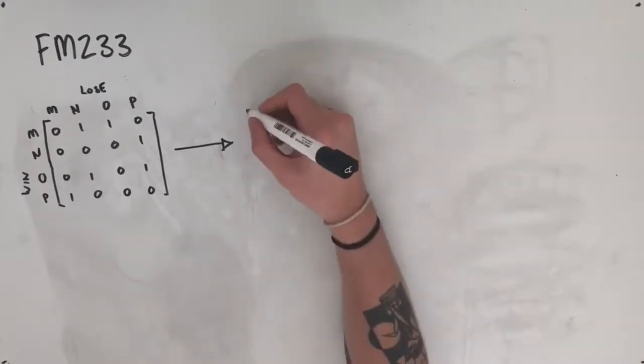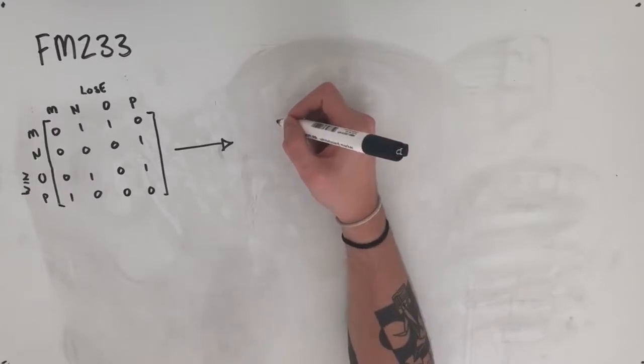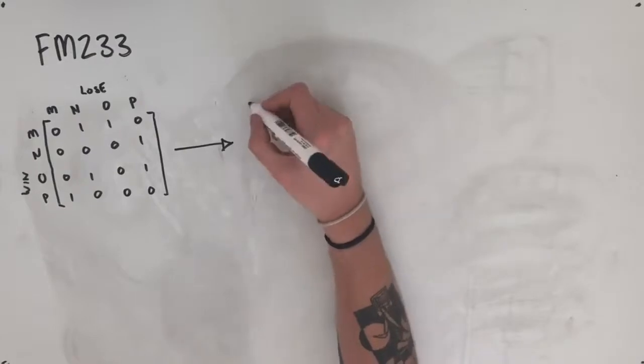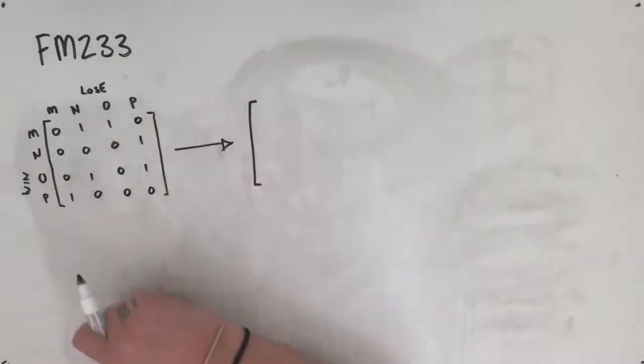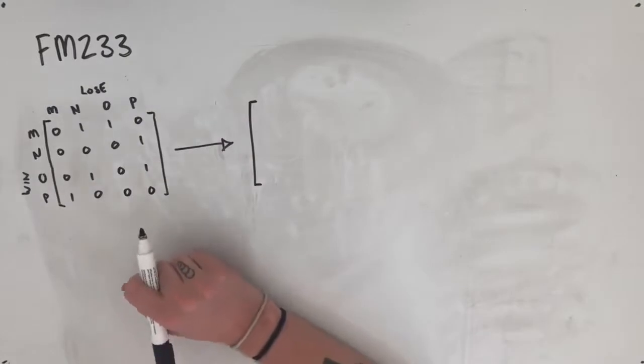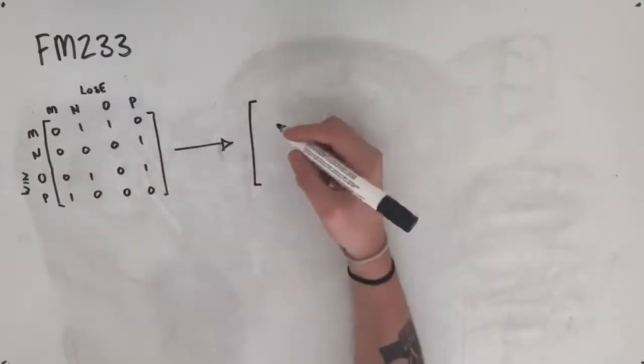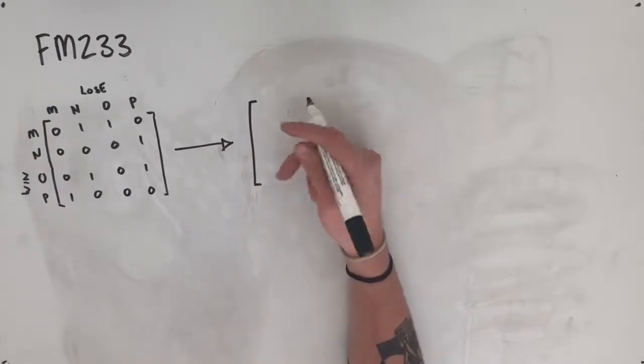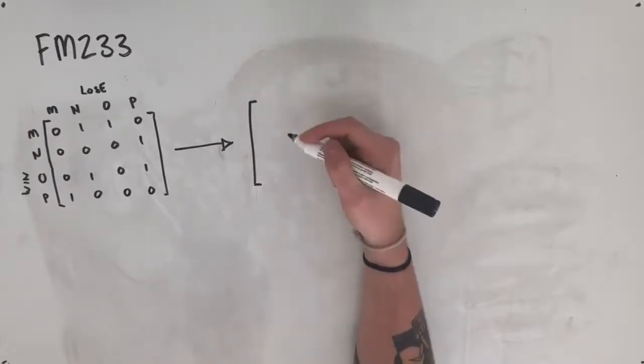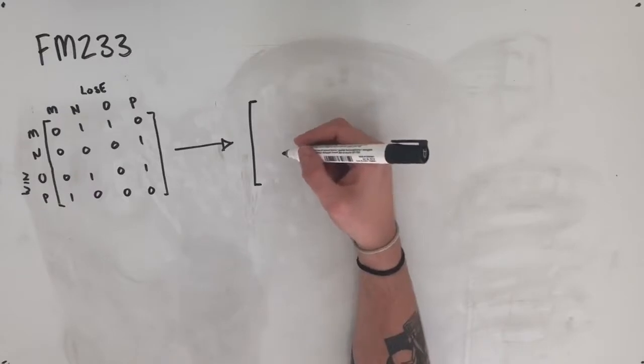So in order to calculate their scores, or their sums, we're going to need to take our original matrix here and square it. So when we square a dominance matrix, we're also given their two-step dominance, so a person's two-step dominance as well.